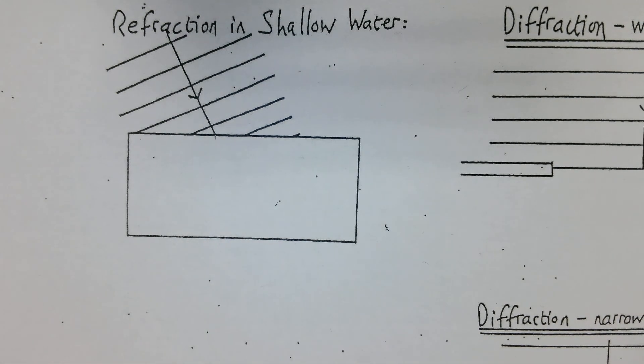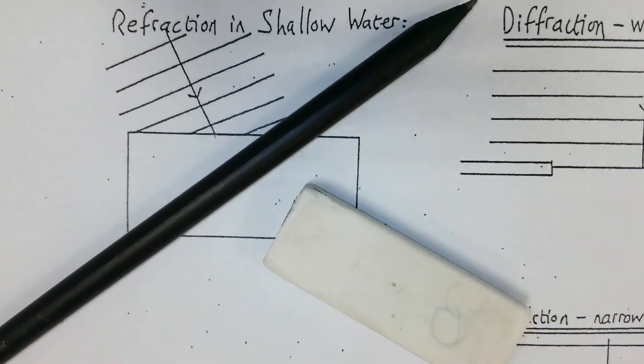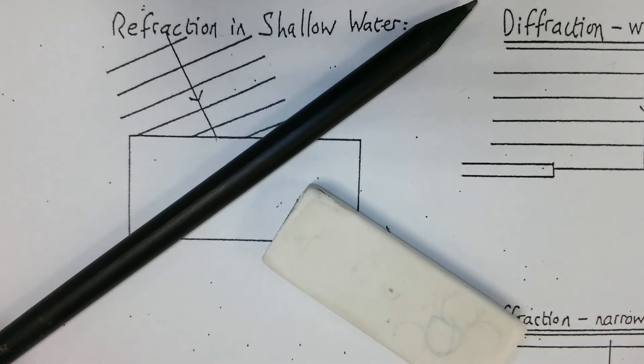So next we've got refraction in shallow water, and you will need a pencil, a rubber, a pen, and a ruler for this one, because you're going to be doing construction lines.